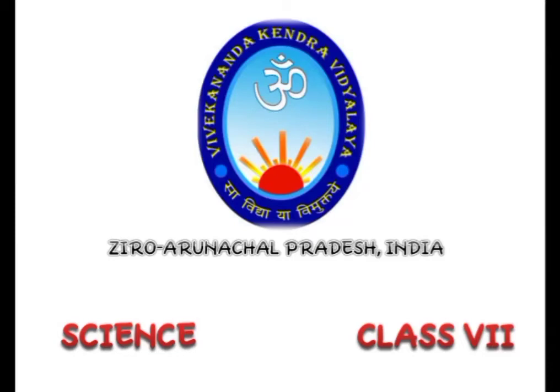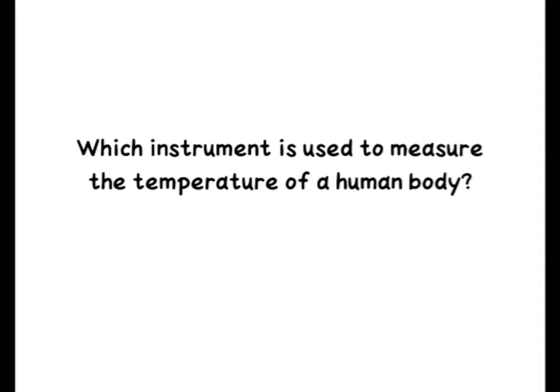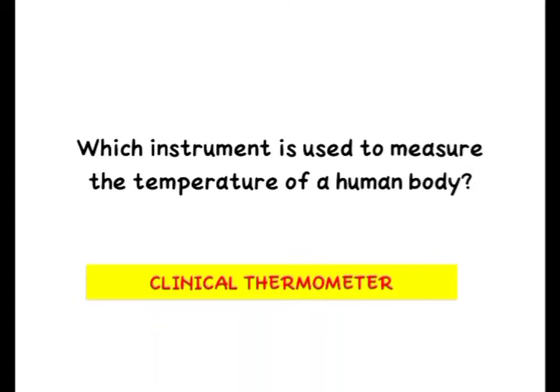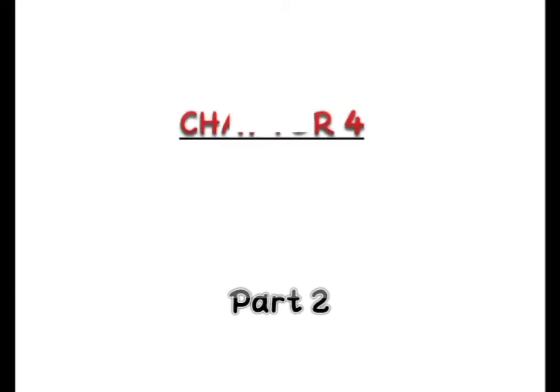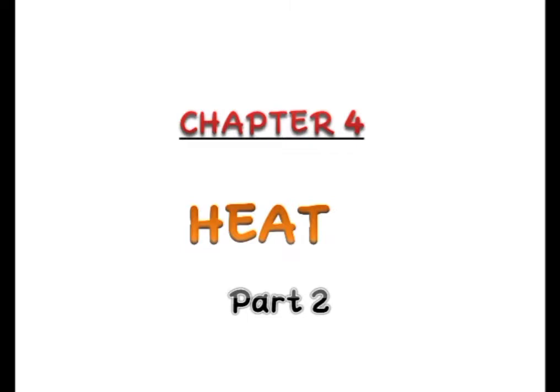Hello children, today we are again back to study science of class 7. Which instrument is used to measure the temperature of a human body? The instrument used to measure the temperature of a human body is none other than the clinical thermometer. Now we are going to discuss the later part of chapter 4 of class 7 science — that is, Heat. The first part has been already discussed in our last class.